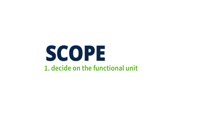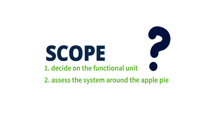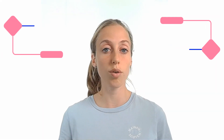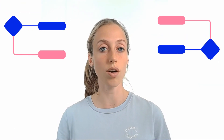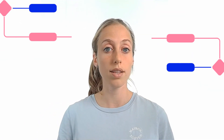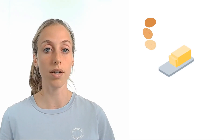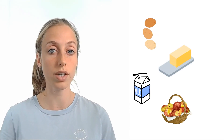The second thing I need to do in my scope phase is assess the system around this apple pie and decide what I'm going to include, what I'm going to exclude, and what is actually necessary to make this apple pie. This is where the flowchart comes into play, because the flowchart is essentially a visual representation of this product system. In the case of the apple pie, the flowchart would show, for example, raw materials like eggs, butter, milk, and apples.